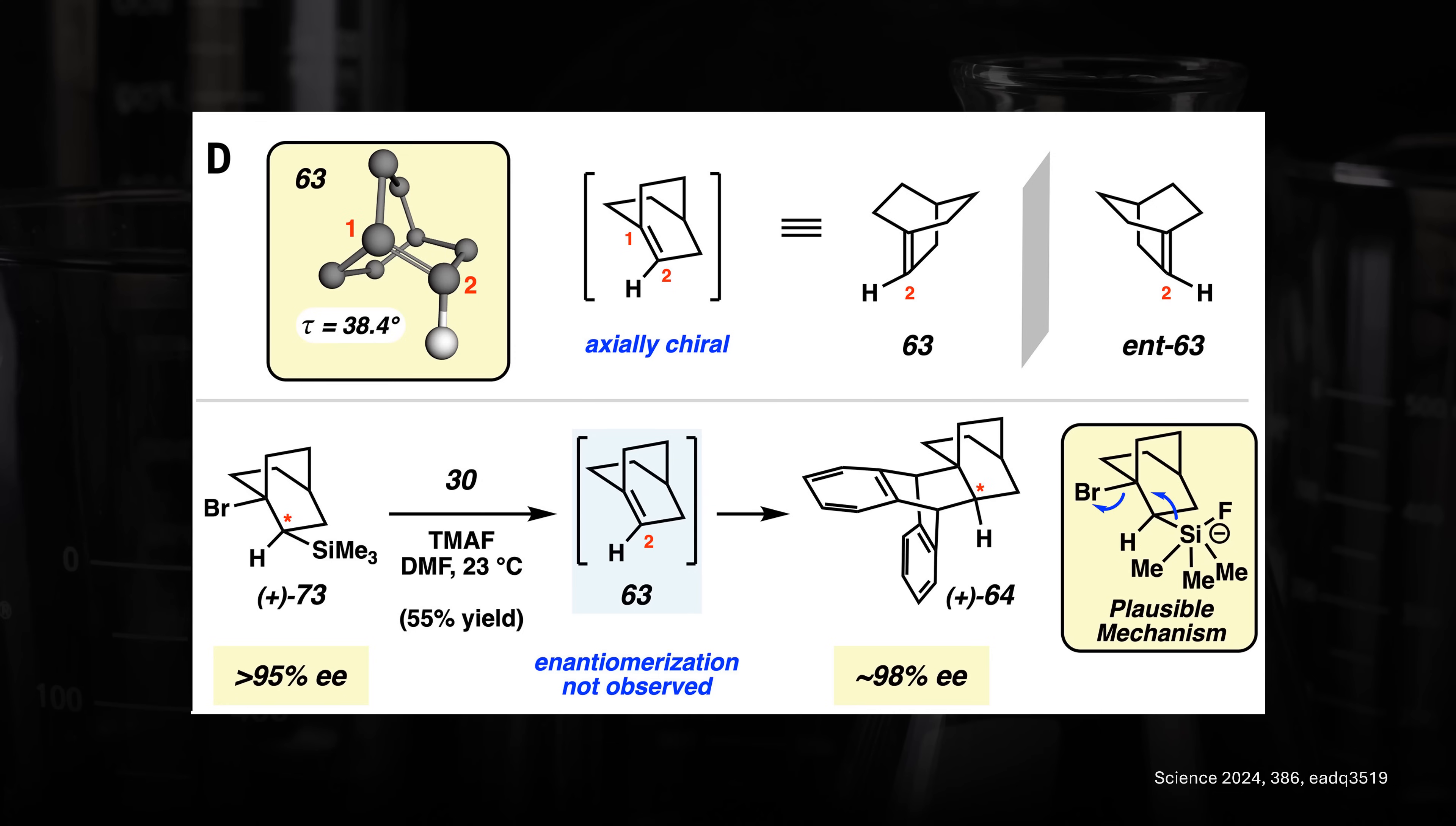This once again suggests a concerted elimination step and a chiral alkene with a high barrier to racemization and a low, if any, diradical character.